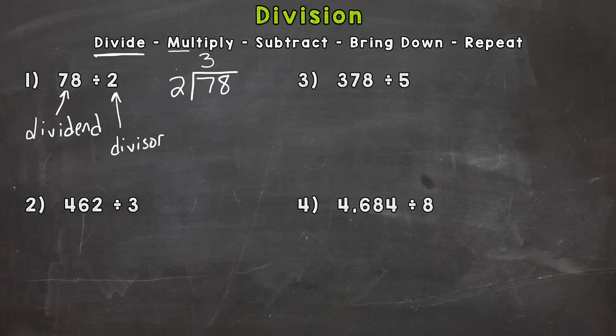So we divided and that 3 needs to go right above the 7. Keep things lined up. Now we need to multiply. So we take this 3 and we come back around and we do 3 times 2 which is 6. Then we subtract. 7 minus 6 is 1.